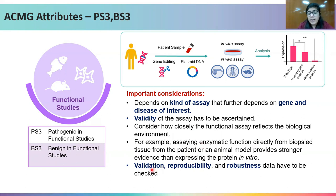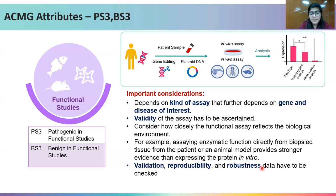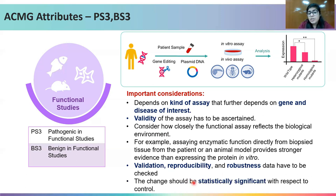The validation, reproducibility, and robustness of the assay should be kept in mind while assigning both PS3 and BS3. The observed change should also be statistically significant with respect to the control.